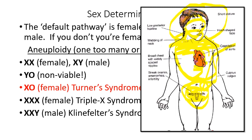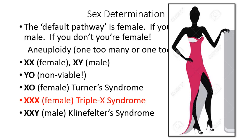Triple X syndrome has few discernible features except that affected women tend to be taller than expected. Many tall runway models may have triple X syndrome without knowing it, since the only sign is being slightly taller than average — giving no reason to seek genetic testing. Klinefelter syndrome results in very tall stature, gynecomastia (minor breast development in males), lack of body hair, and small genitals.